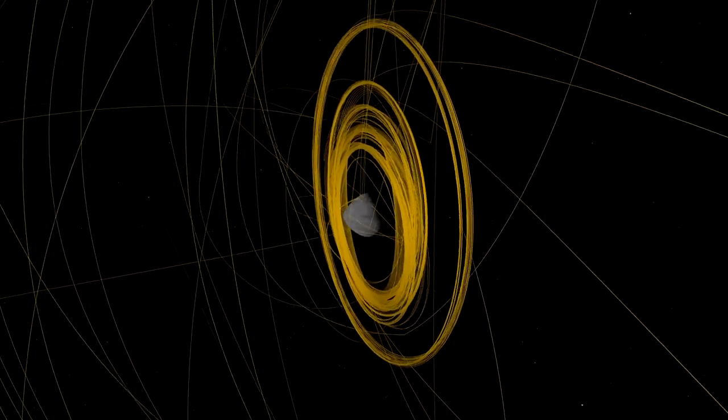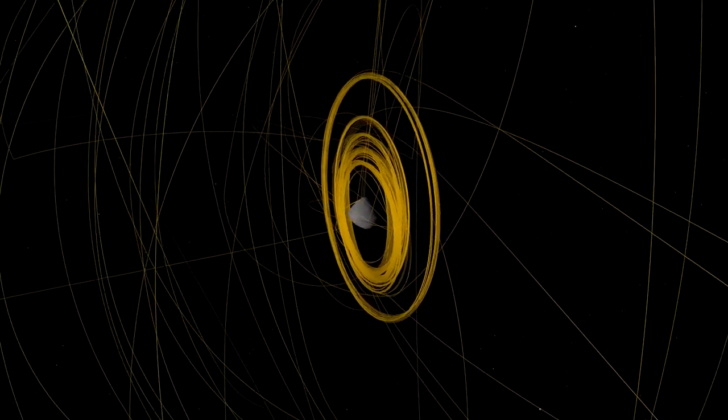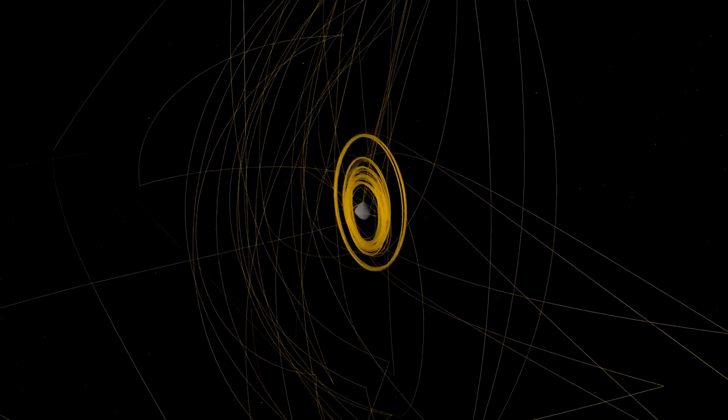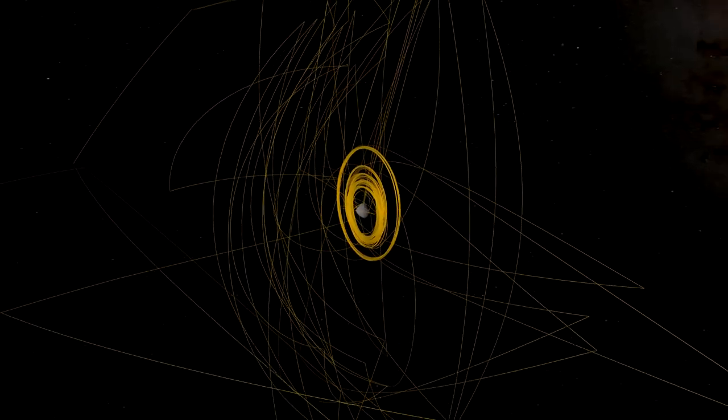Following TAG, the spacecraft drifted to a safe distance away from Bennu. By the end of October, mission controllers determined that it had exceeded its goal of collecting 60 grams of asteroid material.